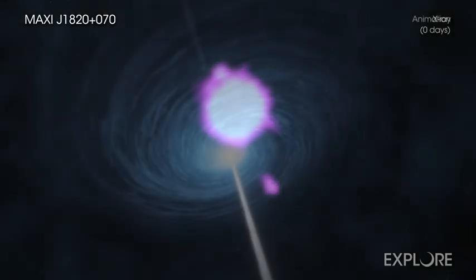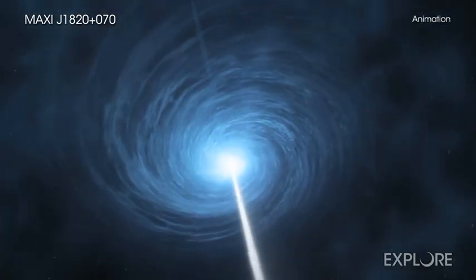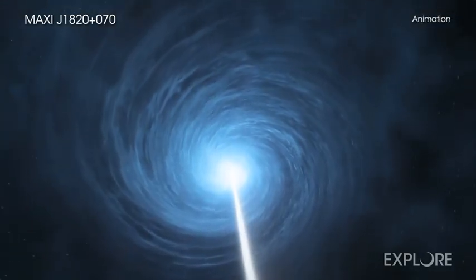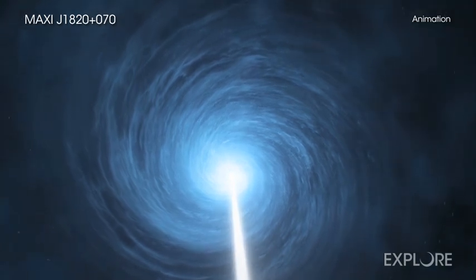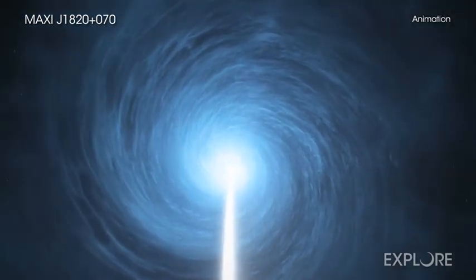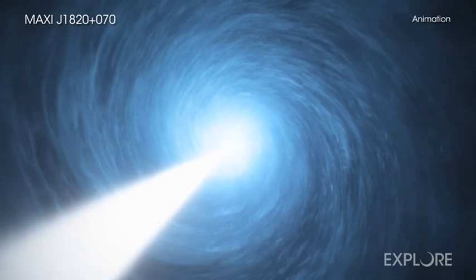In the case of MAXI J1820+070, the southern jet is pointing toward us and the northern jet is pointing away from us, so the southern jet appears to be moving faster than the northern one.